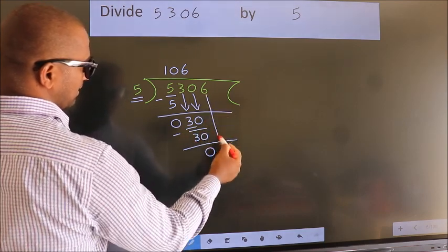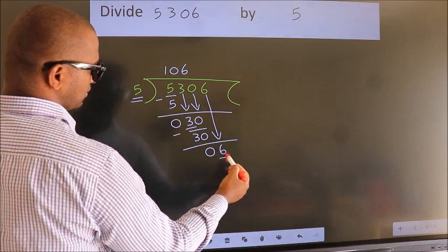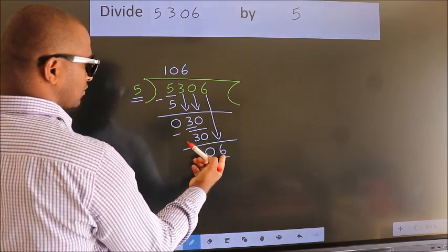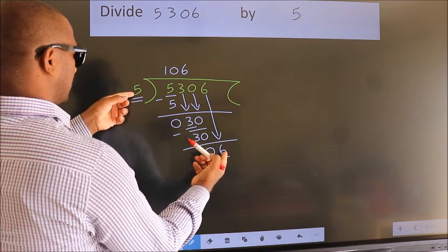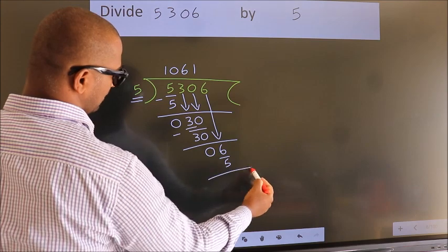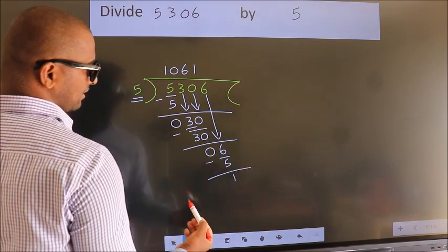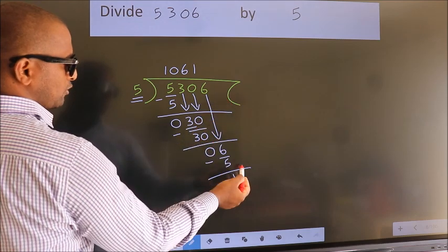After this, bring down the beside number. So 6 down. So 6. A number close to 6 in 5 table is 5 once, 5. Now we subtract. We get 1. No more numbers to bring it down.